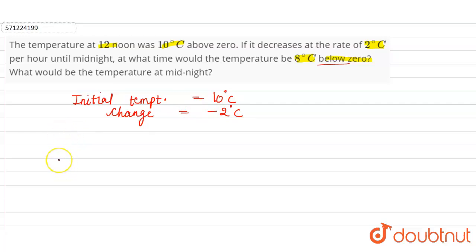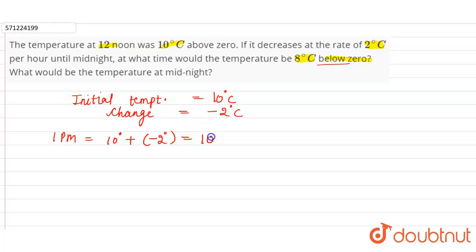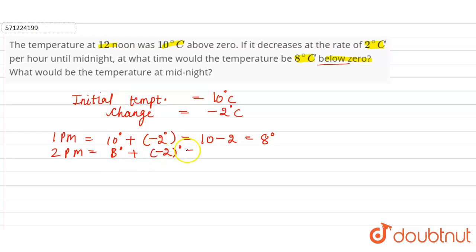We have to check the temperature at 1 pm, 2 pm, 3 pm, and so on. Temperature at 1 pm will be equal to 10 degrees plus minus 2 degrees, which is equal to 10 minus 2 = 8 degrees. Now at 2 pm, the temperature will be equal to 8 degrees plus minus 2 degrees, which is equal to 8 minus 2 = 6 degrees.